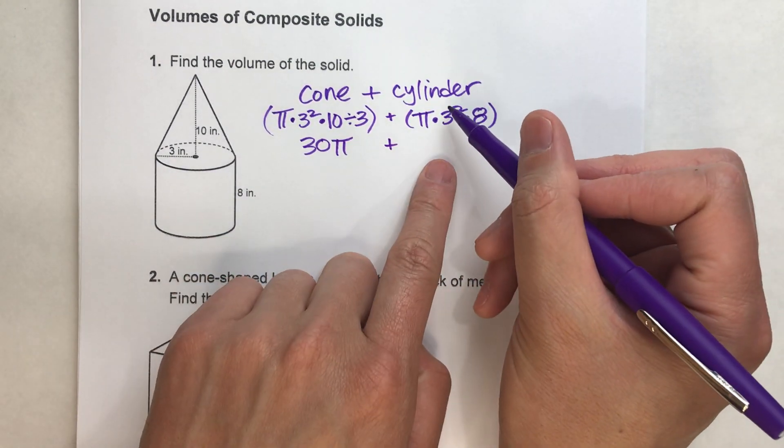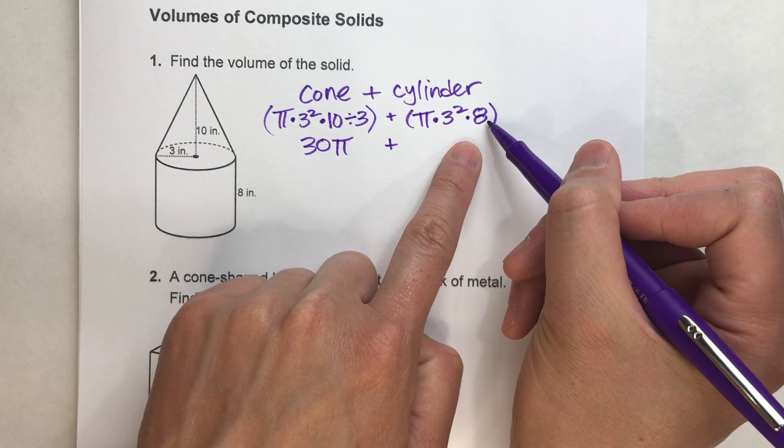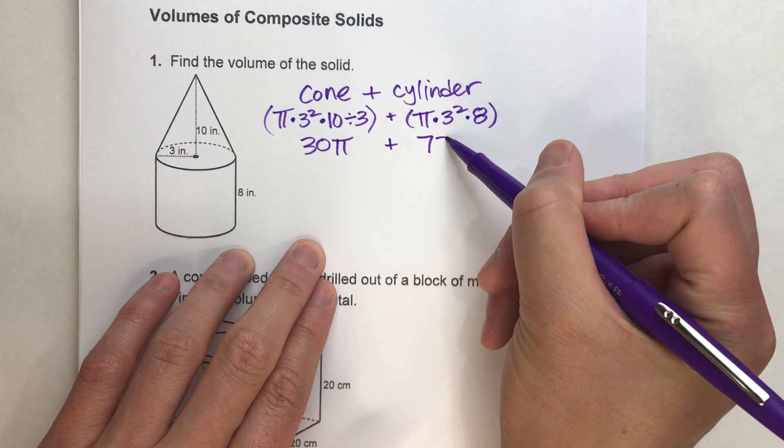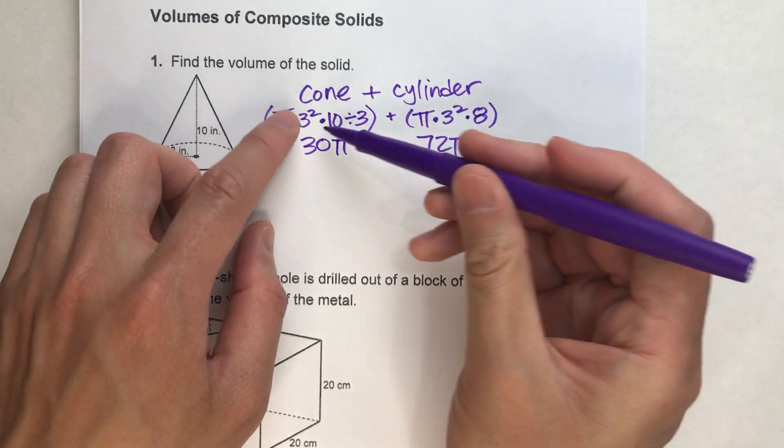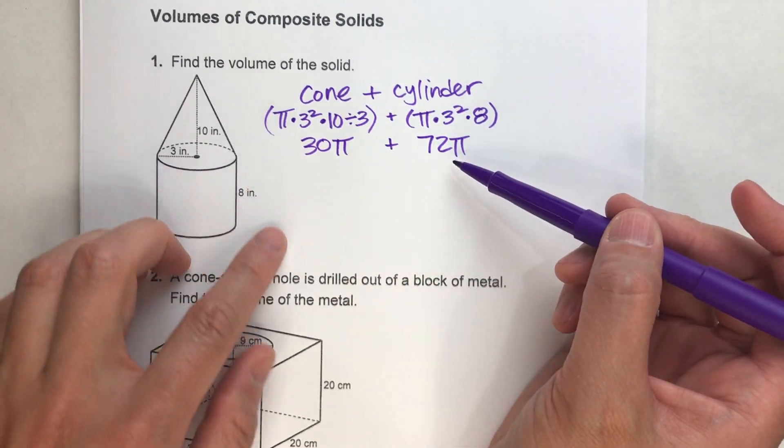On the cylinder part, we've got 3 squared, which is 9, times 8, which is 72, times pi. So look, we've just simplified this very complicated mess to this, 30 pi plus 72 pi.